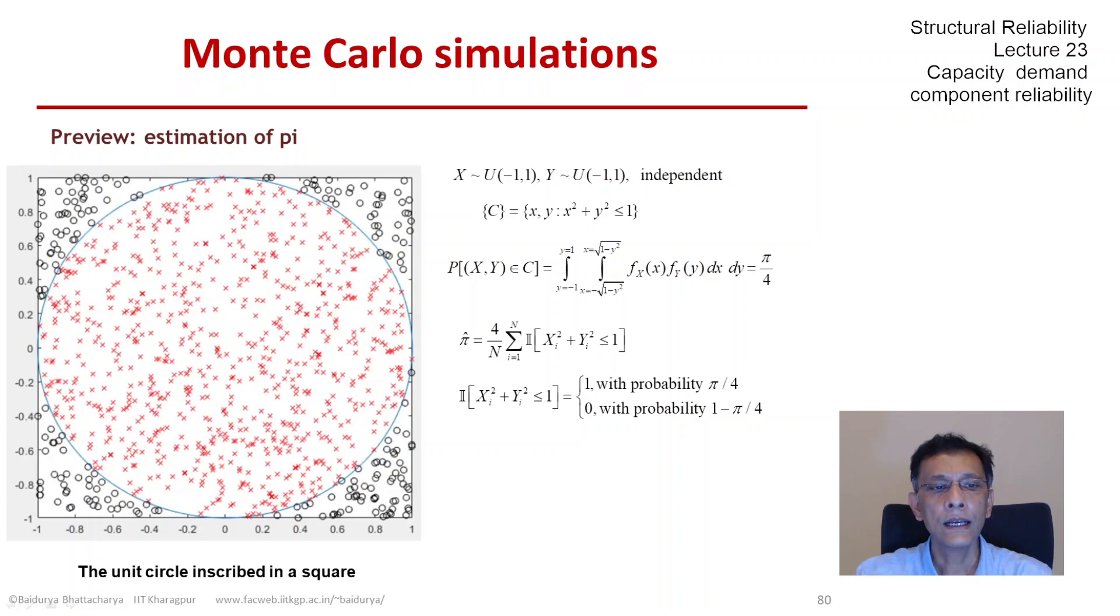So when we look at this in the structural context, what you see here is the estimate is a random variable, its mean is the true value, and its variance is inversely proportional to the sample size. So these concepts can be carried nicely to a structural reliability situation.